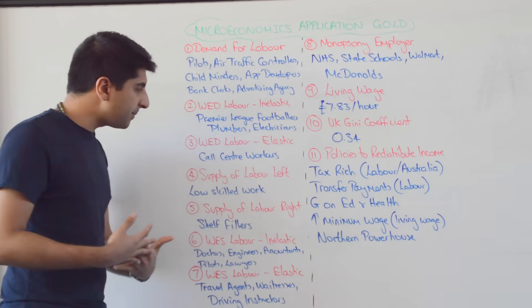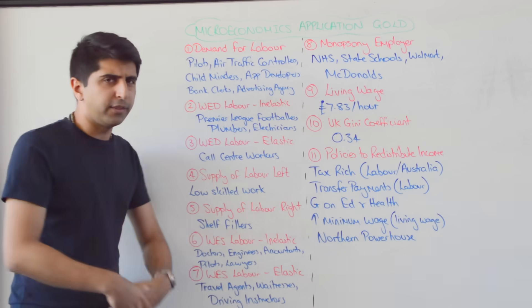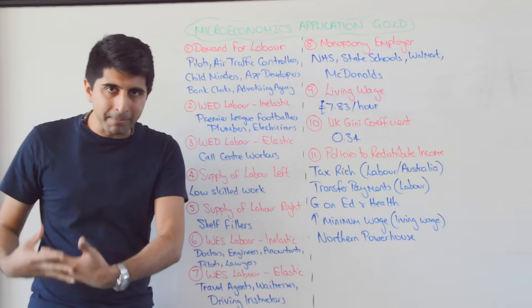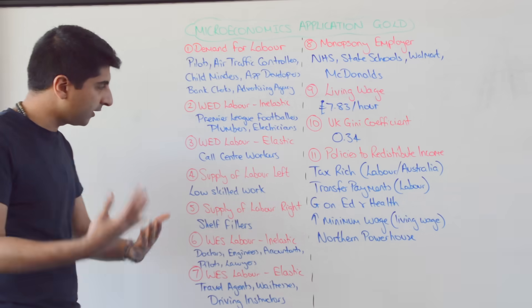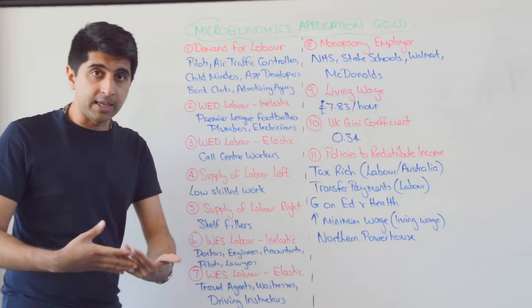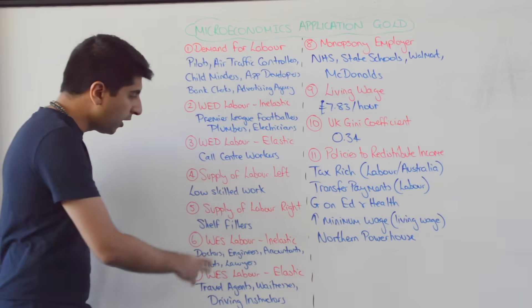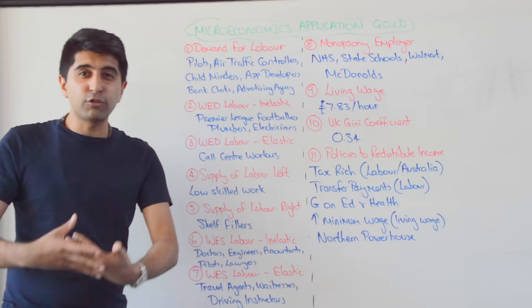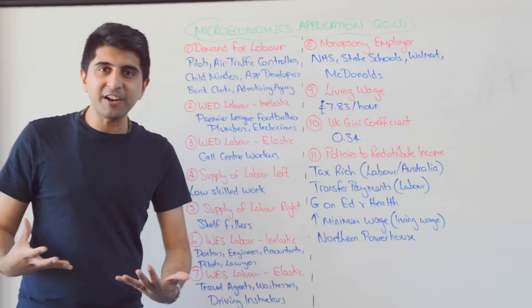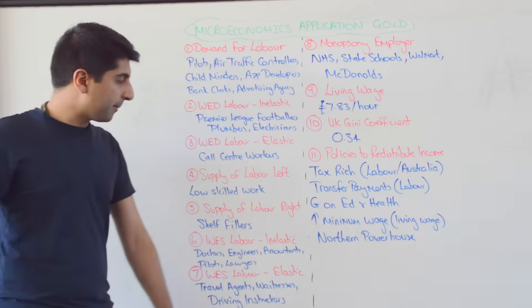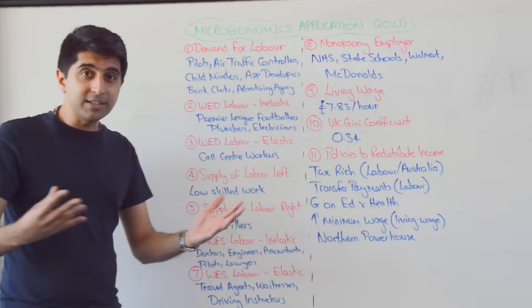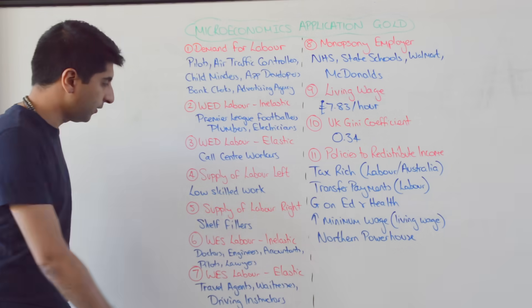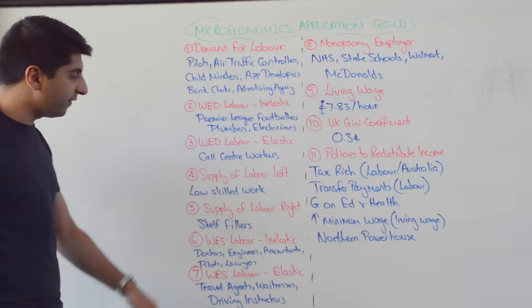Where have we seen supply of labour shifting left? Low-skilled workers — following the recent Brexit vote, a lot of low-skilled workers are now leaving the UK, going back home, uncertain about their position once we actually leave the EU. Supply of labour shifting right: shelf fillers — a lot of graduates are now ending up in non-graduate jobs, with many graduates ending up filling shelves in Tesco, increasing the supply of shelf fillers and dropping wages significantly for these professions.